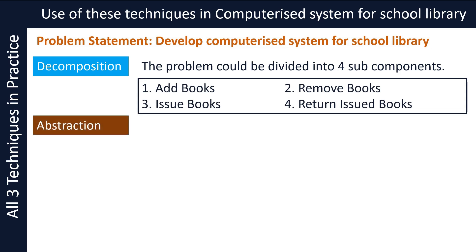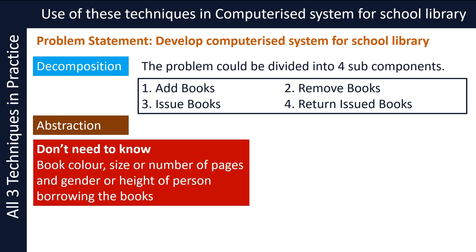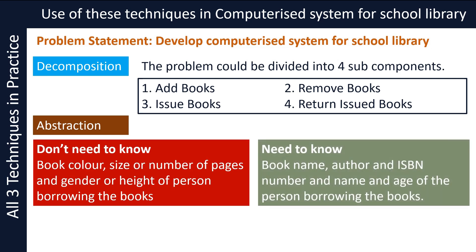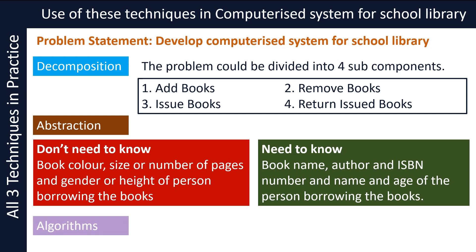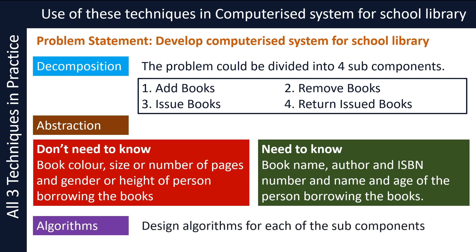You can now use abstraction to simplify the problem further. To be able to design the library system, you don't need to know the colour of the book, size of the book, or number of pages. Similarly, you don't need to know the gender or height of the person borrowing the books. All you need to know is the name, author and ISBN number of the book, and the name and age of the person borrowing the books. You can now start designing algorithms for each of the sub-components.